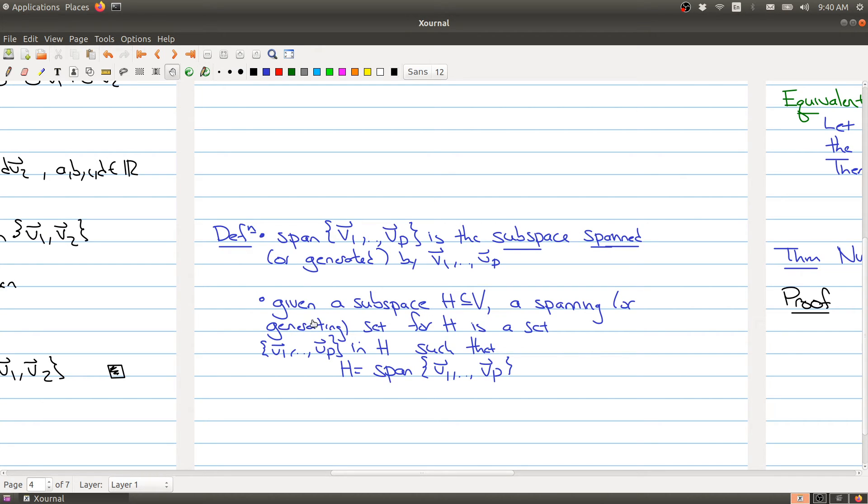And this part here is we want to kind of do this in some ways in reverse. Suppose that somebody gives you a subspace H. Then a spanning set for H is a set of vectors inside of H such that you can write H in terms of the spanning set of vectors, V1 through Vp. So we're kind of given the subspace, and then we're asking if there is a set of vectors inside of H such that H is the span of those vectors, then we would say that V1 through Vp is a spanning set.